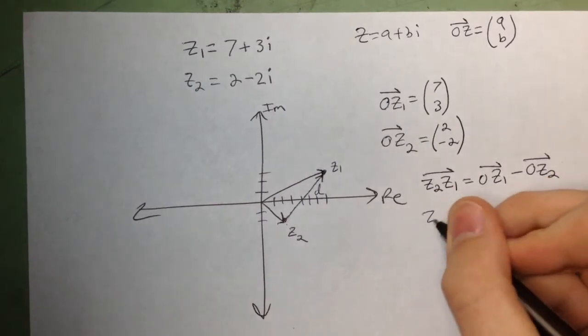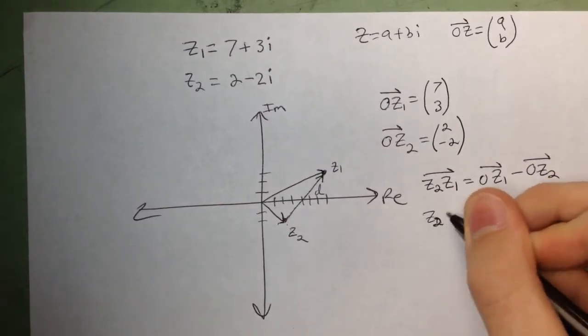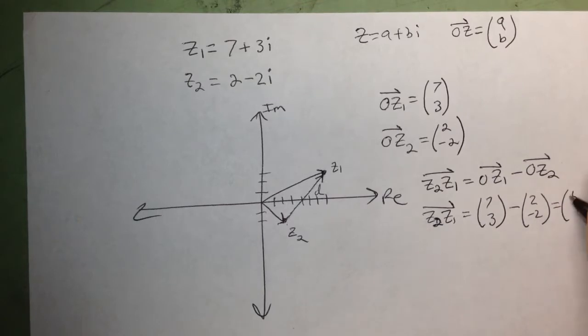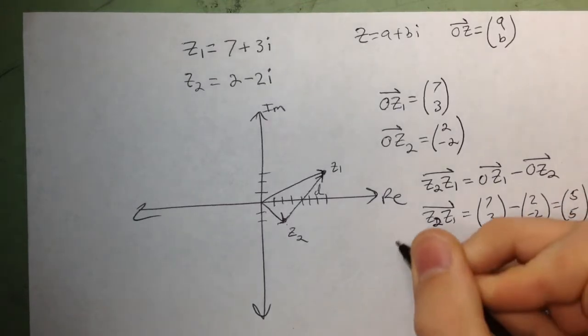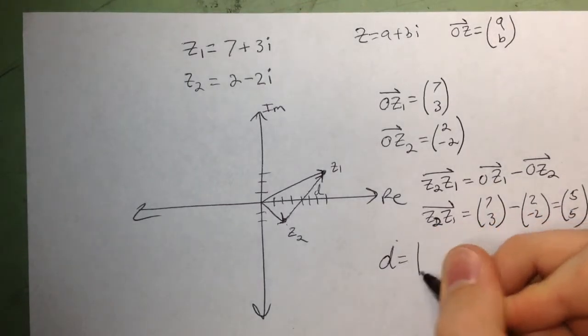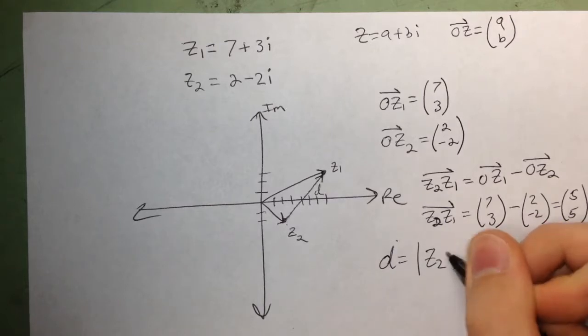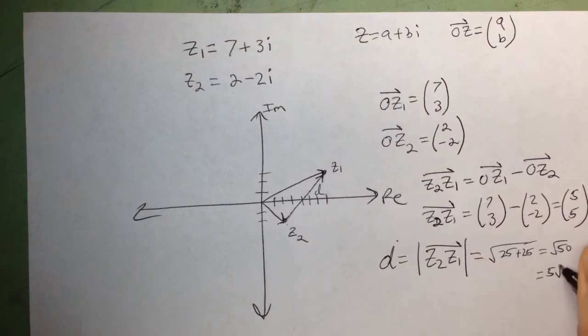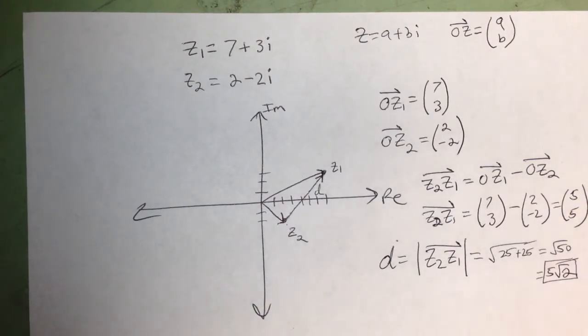And so we get the vector (5, 5), and then we just take the magnitude of that vector, and we find that the distance between the two points is 5 root 2.